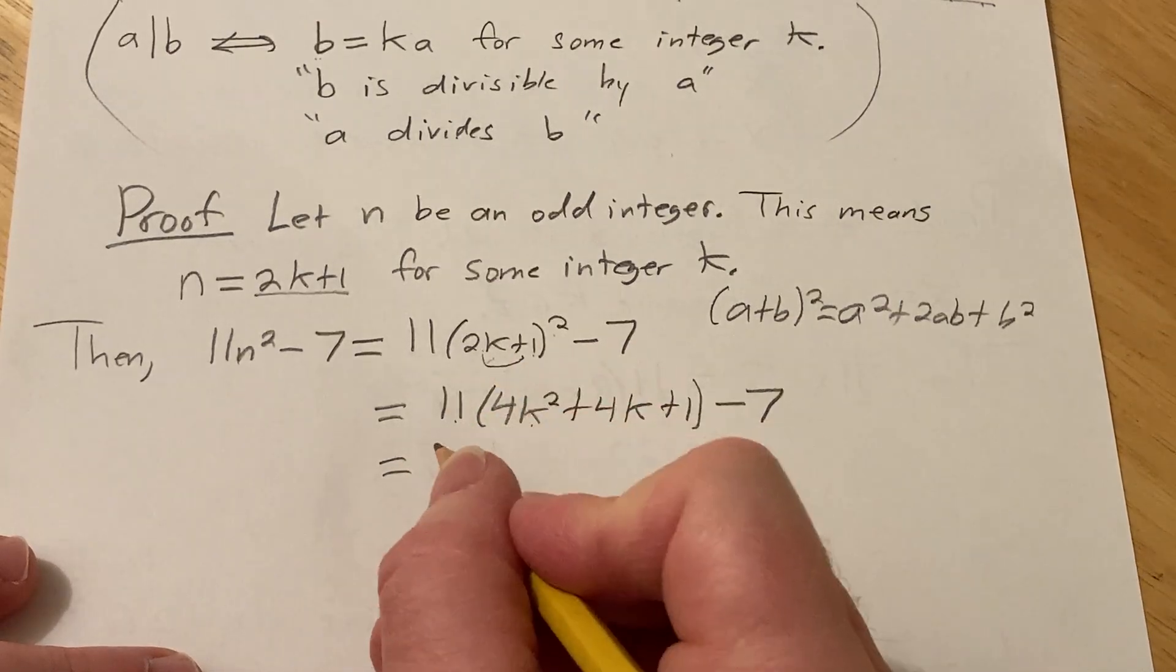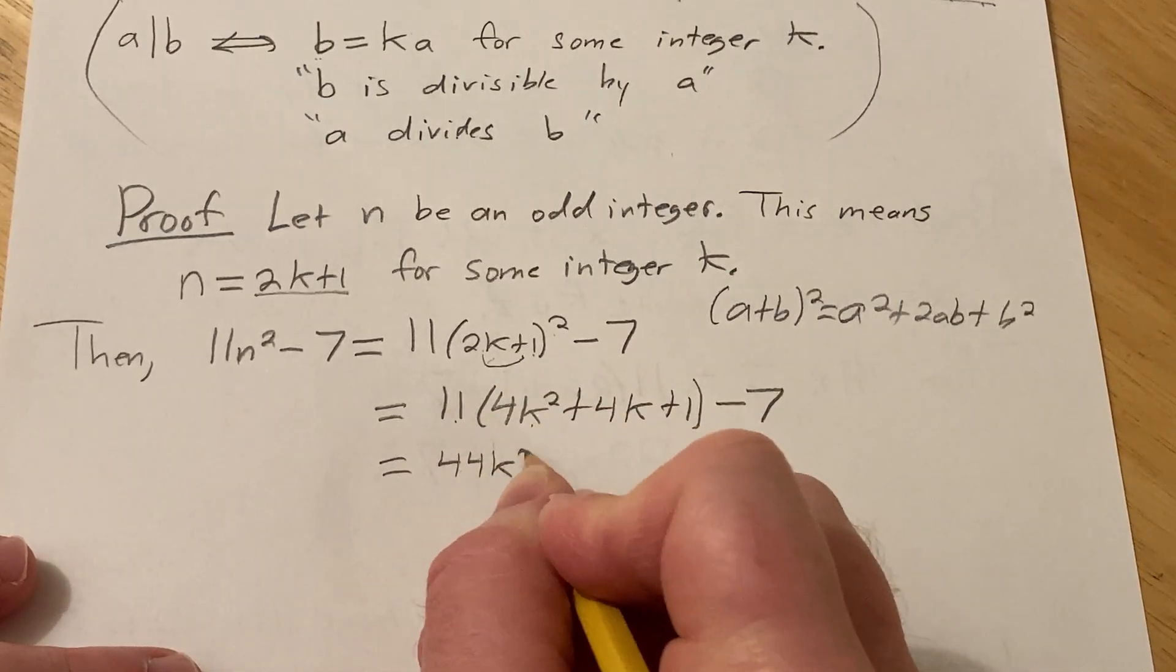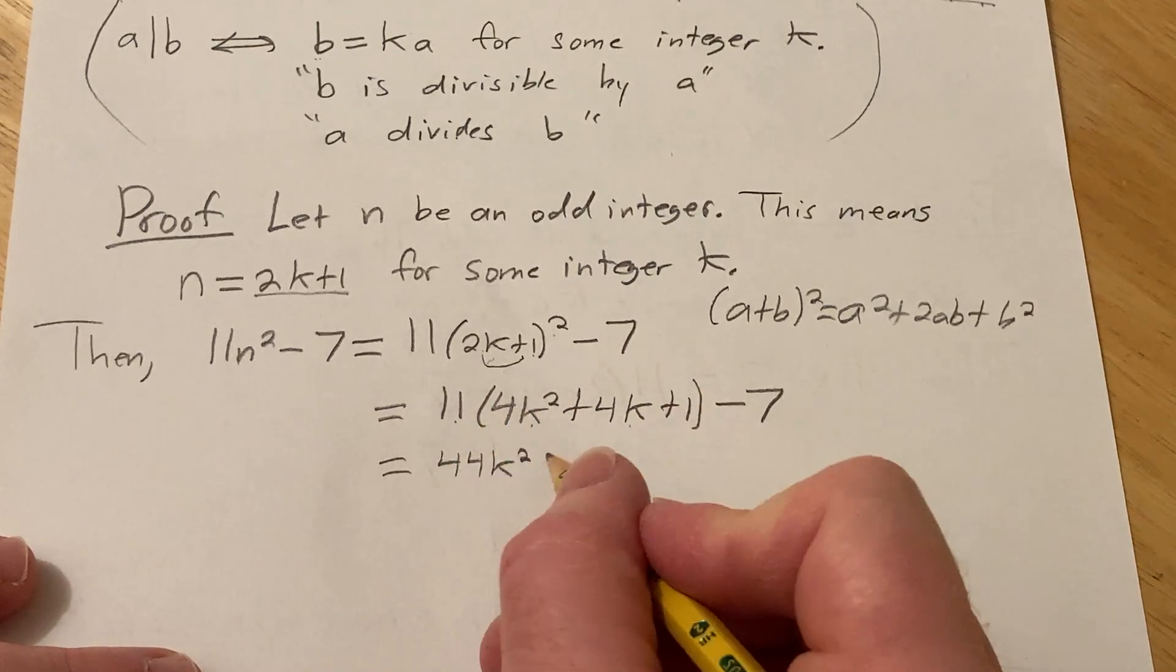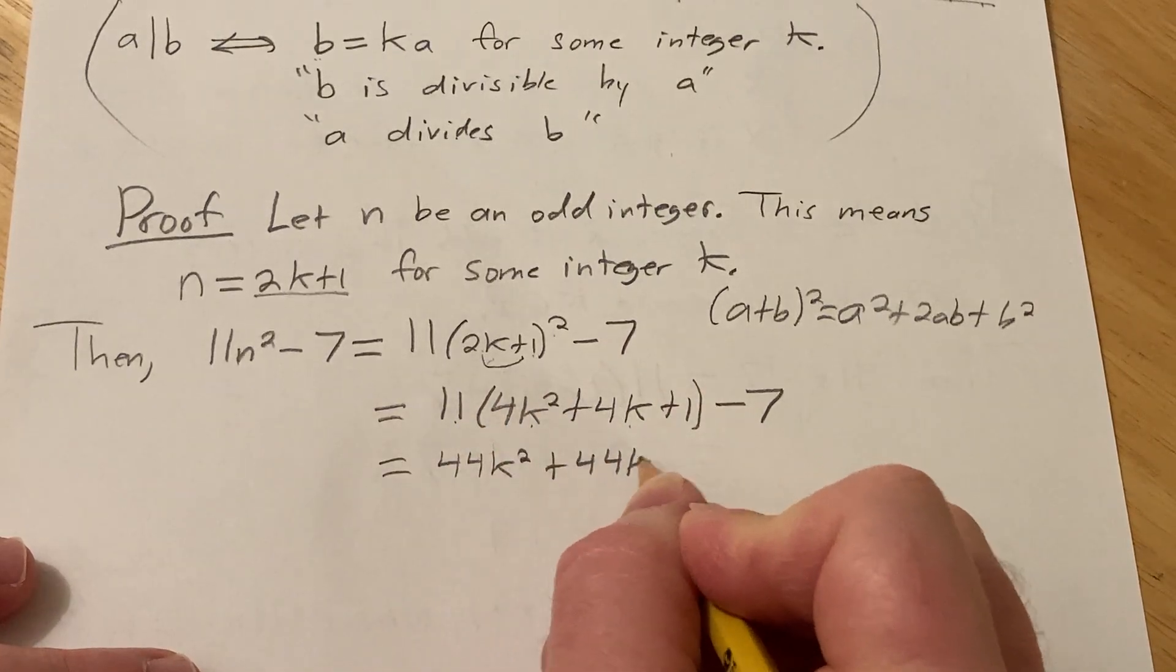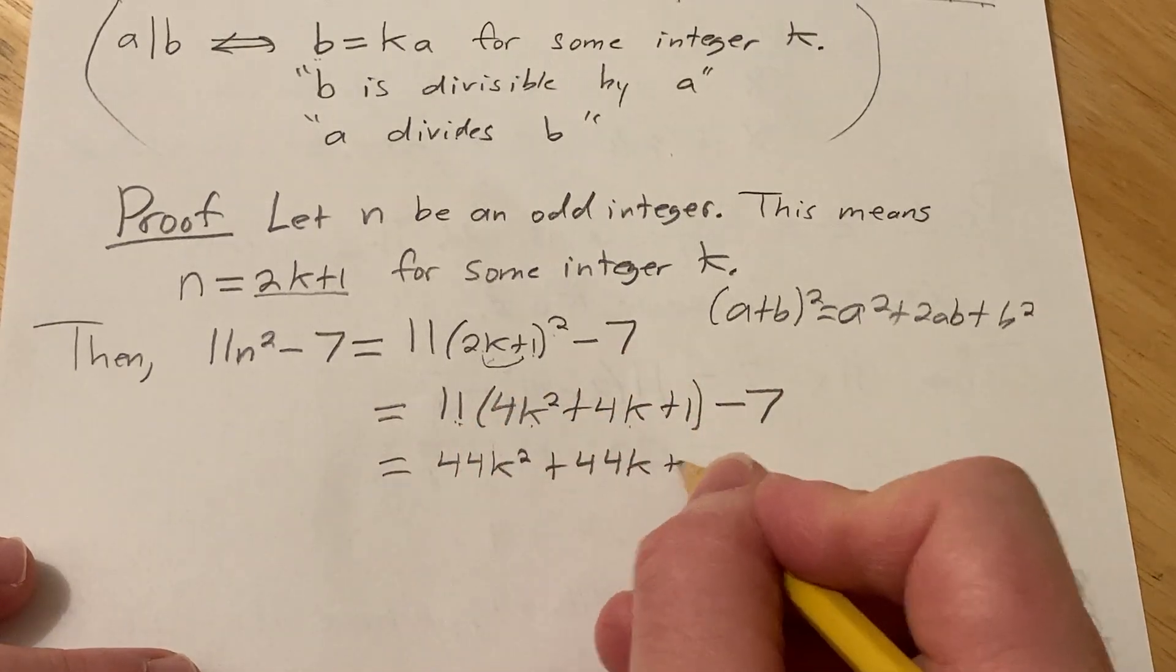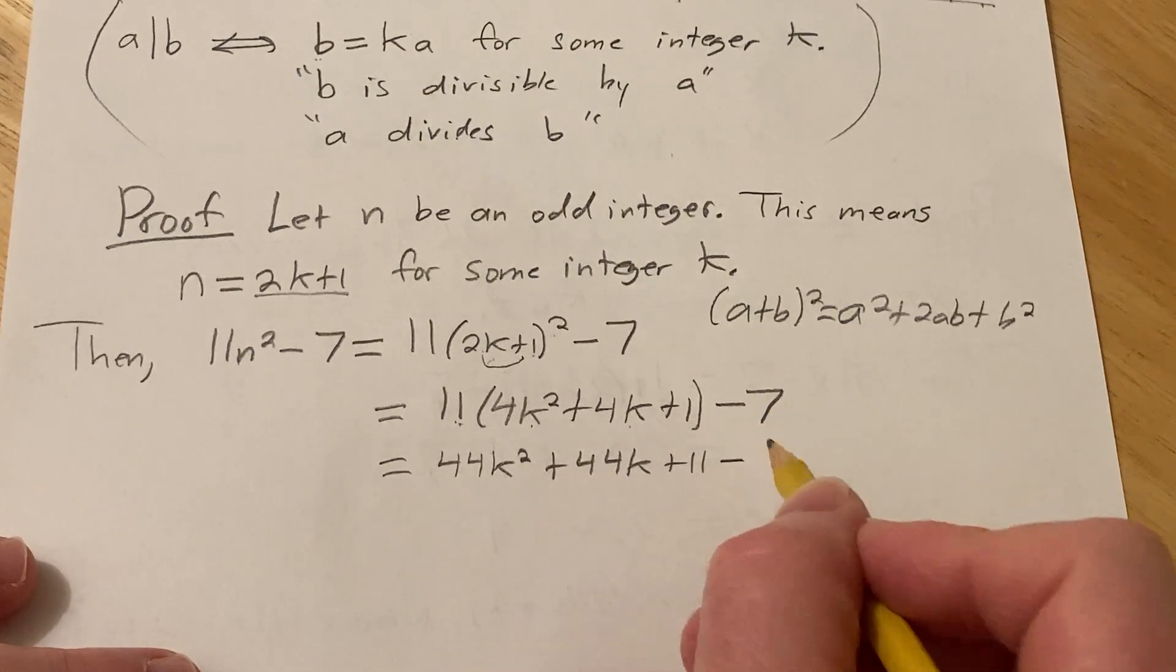11 times 4k² is 44k². 11 times 4k is 44k. And then 11 times 1 is 11. And then here we have the minus 7.